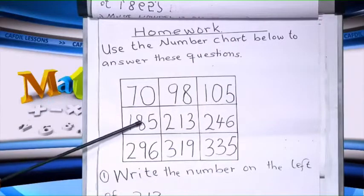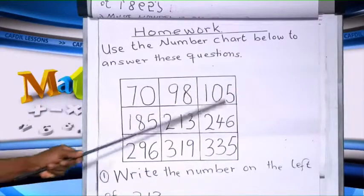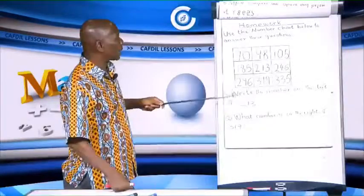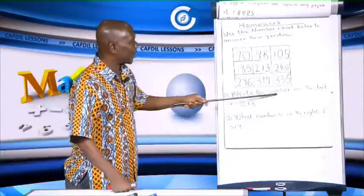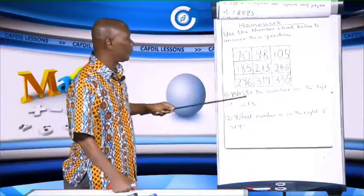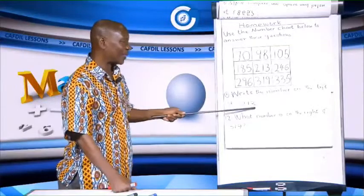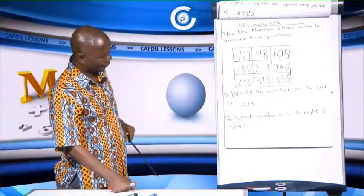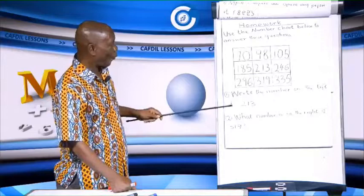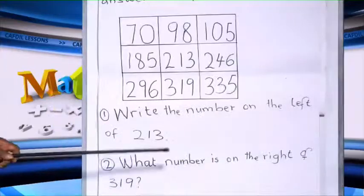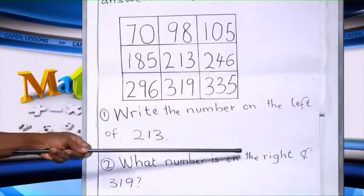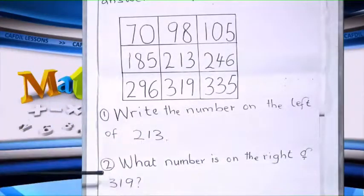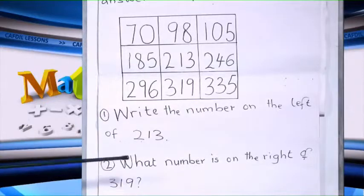That is the numbers that form the chart. The questions: write the number on the left of 213. Question 2: what number is on the right of 319?